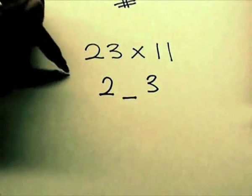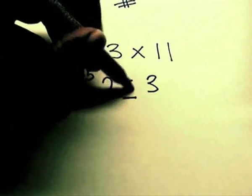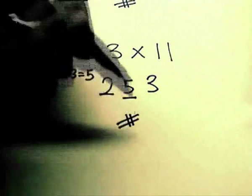Next just perform the addition of 2 and 3, which is 5, and replace 5 in the empty space. Your answer is 253.